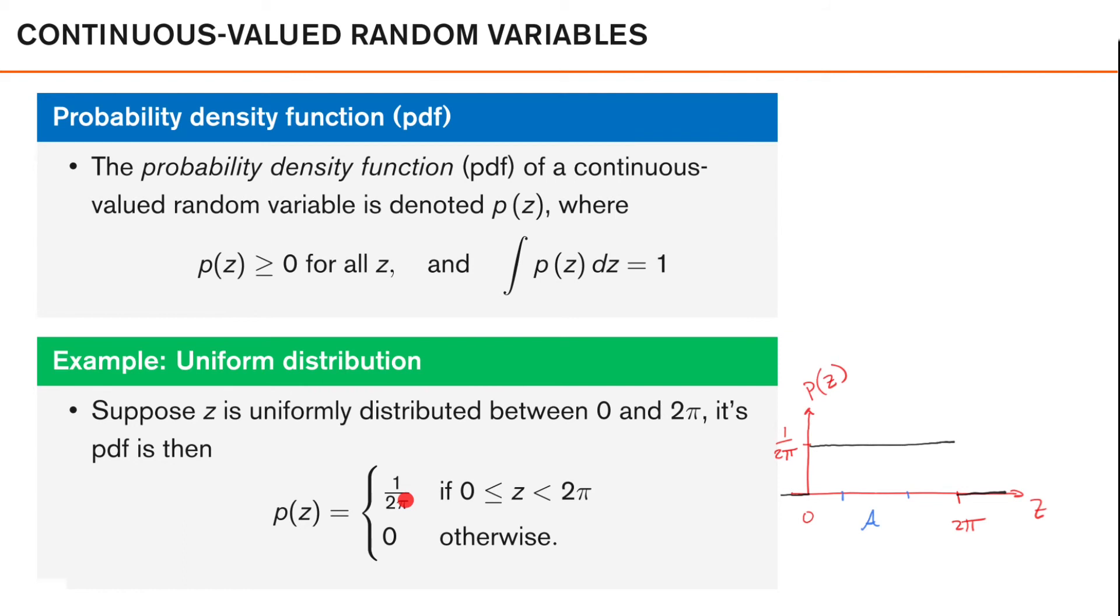Now the probability mass that z is in this interval can be written like this: z is in A and can be calculated by integrating the PDF over the interval A. So this is the integral of the PDF. So in this case, the PMF is the integral of the PDF.